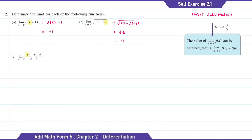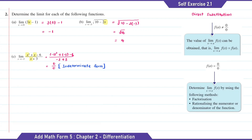For Question C, we're going to substitute x with negative 3 as x approaches negative 3. So this is equal to negative 3 squared plus negative 3 minus 6 over negative 3 plus 3. The answer is 0 over 0, which is known as indeterminate form. We cannot determine the limit value when it is in indeterminate form.